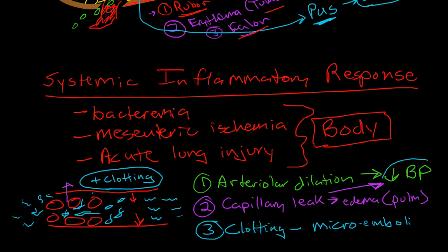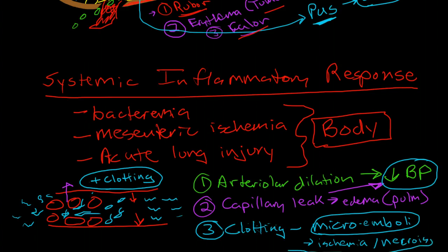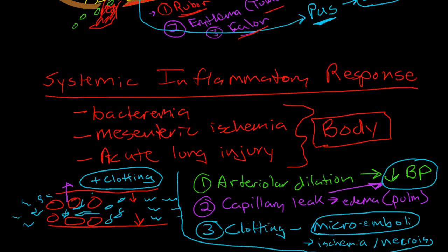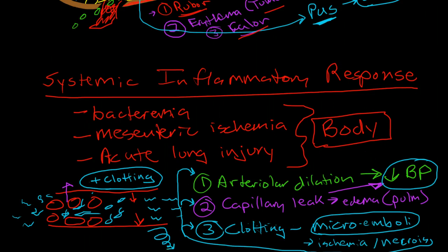All of these - the low blood pressure, poor perfusion, and the microemboli - decrease perfusion further and you end up with ischemia and necrosis. And of course what does ischemia and necrosis do? It is cell injury, so it is going to increase the inflammation further. You end up in a positive feedback loop - a vicious cycle, otherwise known as a downward spiral - until death if it's not stopped.